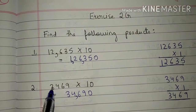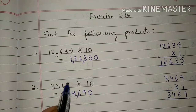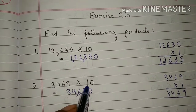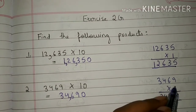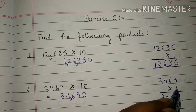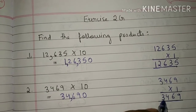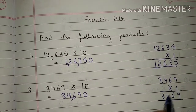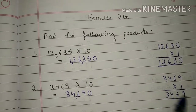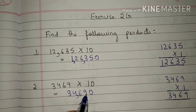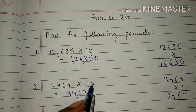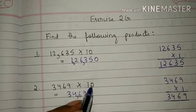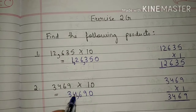Second question: 3,469 into 10. Students, first we will multiply 3,469 by 1. So 1 into 9 is 9. 1 into 6 is 6. 1 into 4 is 4. 1 into 3 is 3. So 3,469 multiplied by 1 will give 3,469. We will write 3,469 here, and here 0 is written so we will write 0 here also. Now students, 3,469 multiplied by 10 will give 34,690.